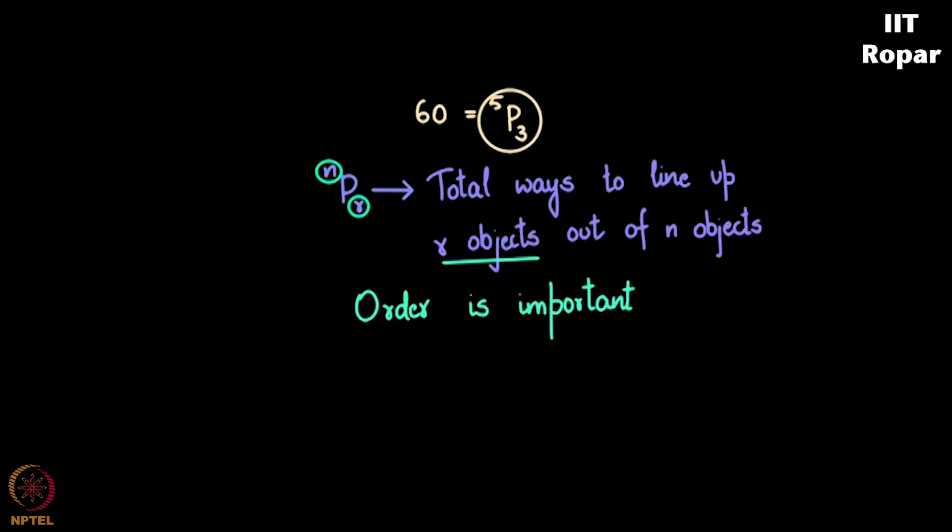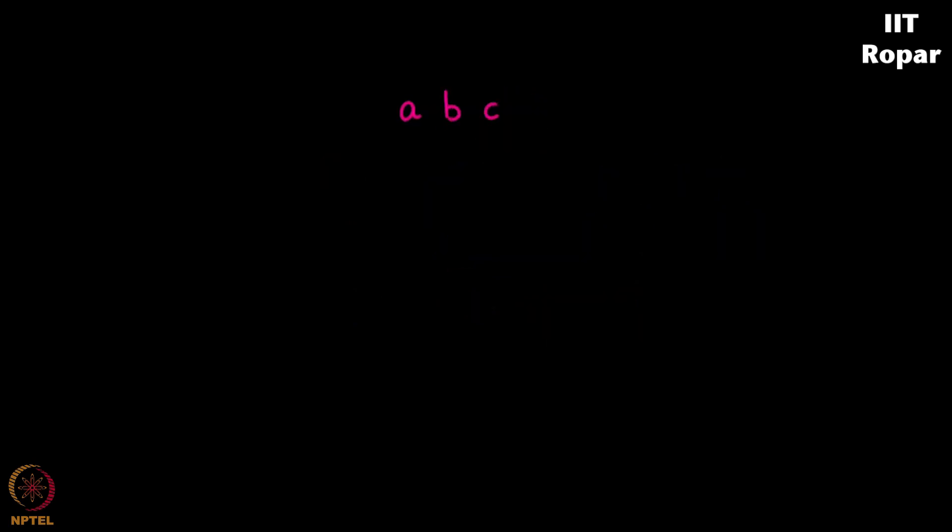If you take from five elements three elements, let's say A, B, C, A, B, C will be different from B, A, C, and so on. We have discussed that.